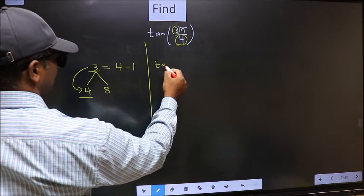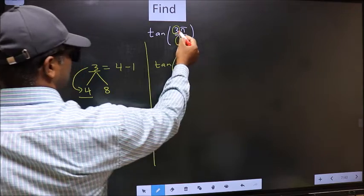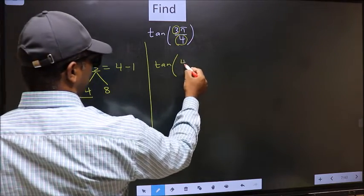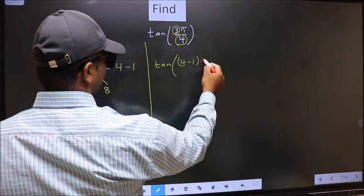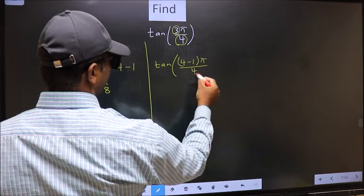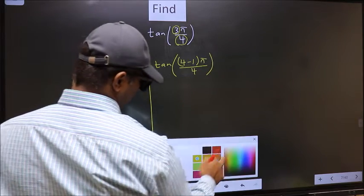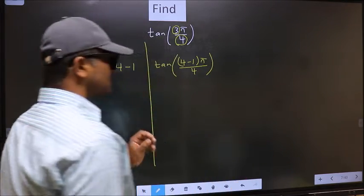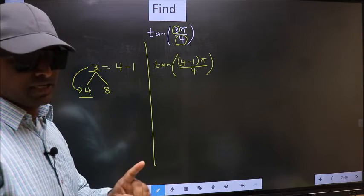So this will become tan. In place of 3, now we should write 4 minus 1, π/4. This is your step 1.